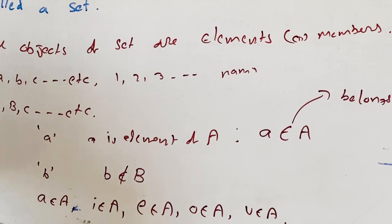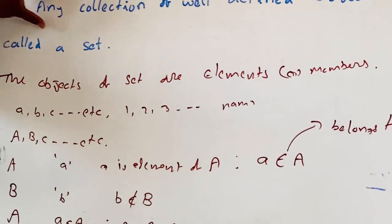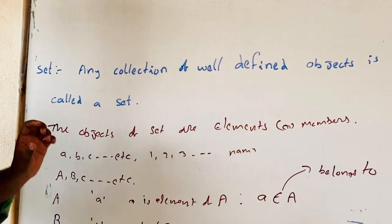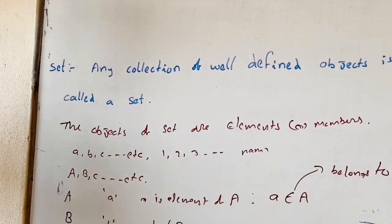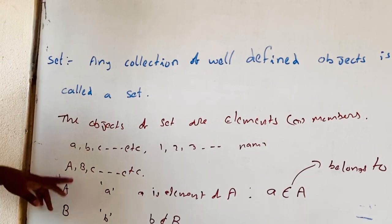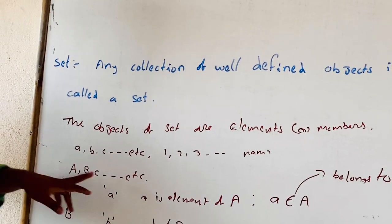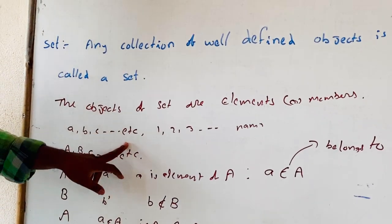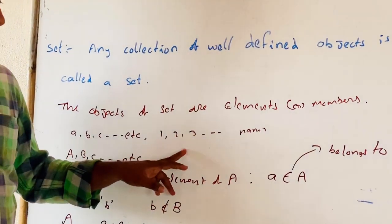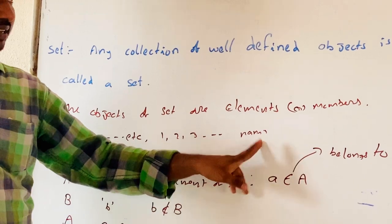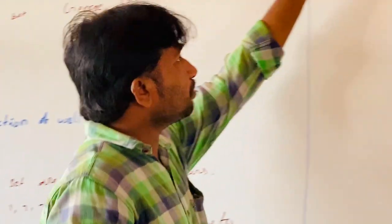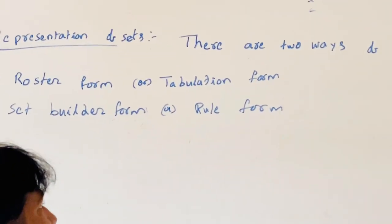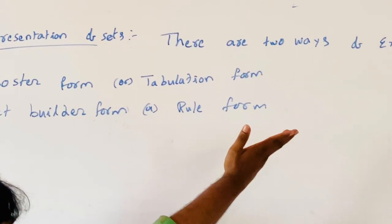So, any collection of well-defined objects is called a set. Generally, a set is denoted by English capital alphabets and the elements are given by small alphabets, numbers, or names. Now, in the next topic: Representation of Sets.